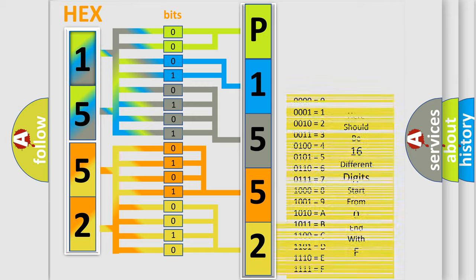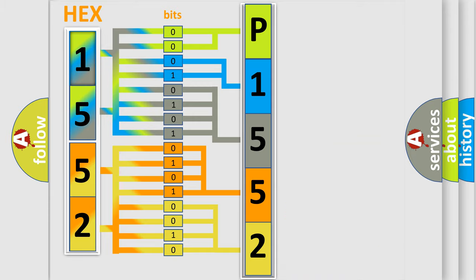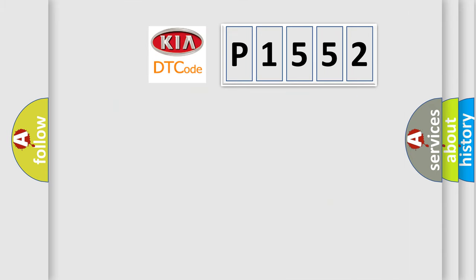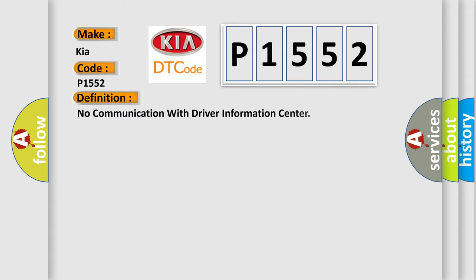We now know how the diagnostic tool translates received information into a more comprehensible format. The number itself does not make sense to us if we cannot assign meaning to what it actually expresses. So, what does the diagnostic trouble code P1552 interpret specifically for KIA car manufacturers?